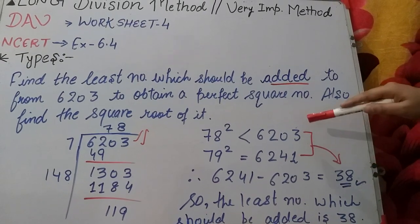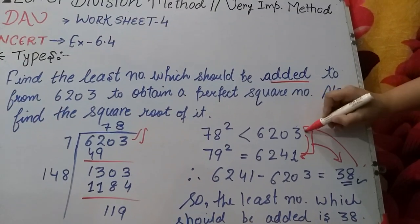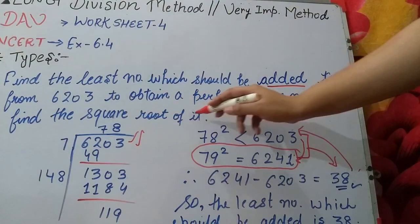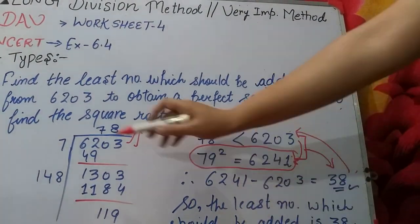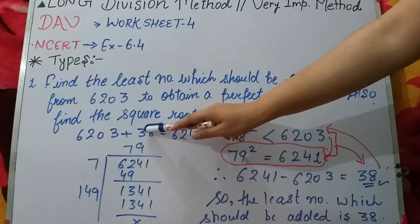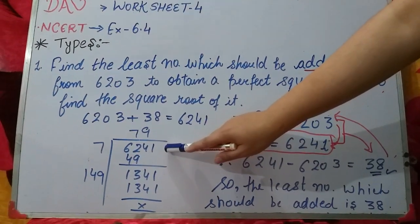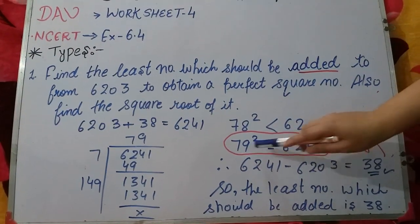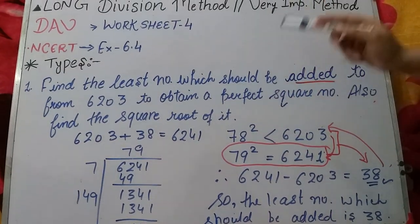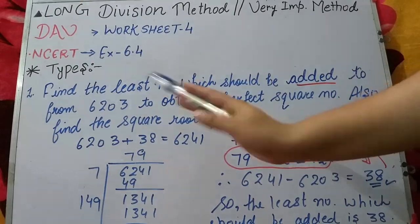So if we add 38 to the given number, it becomes a perfect square: 6203 + 38 = 6241, and the square root of 6241 is 79. This was the added method. Recall: in the subtracted method, you do long division on the given number and subtract the remainder from it to get the perfect square. In the added method, you find the difference and add it.